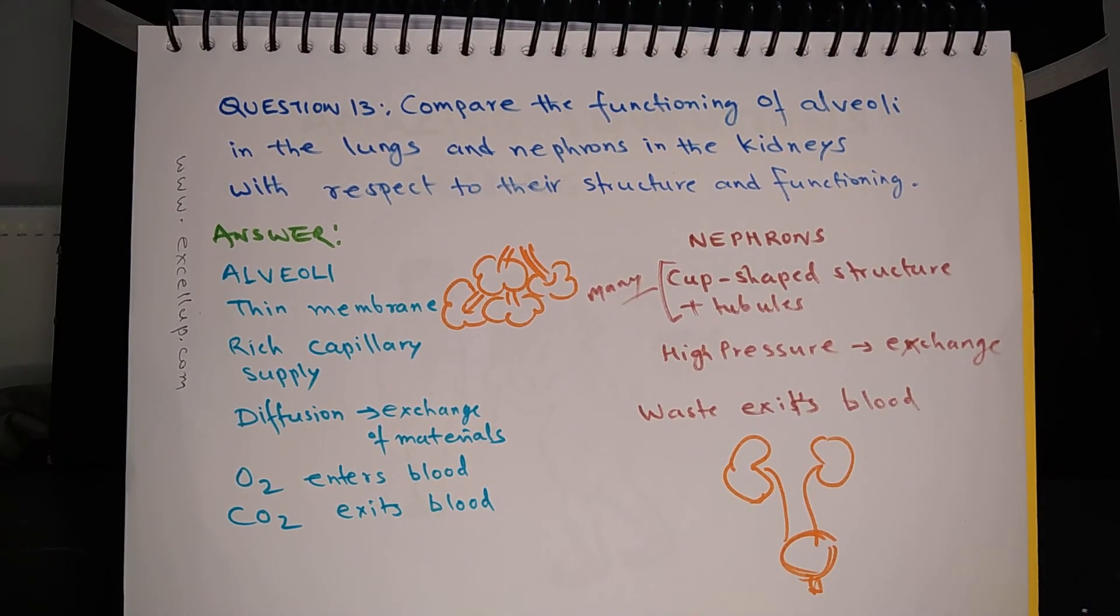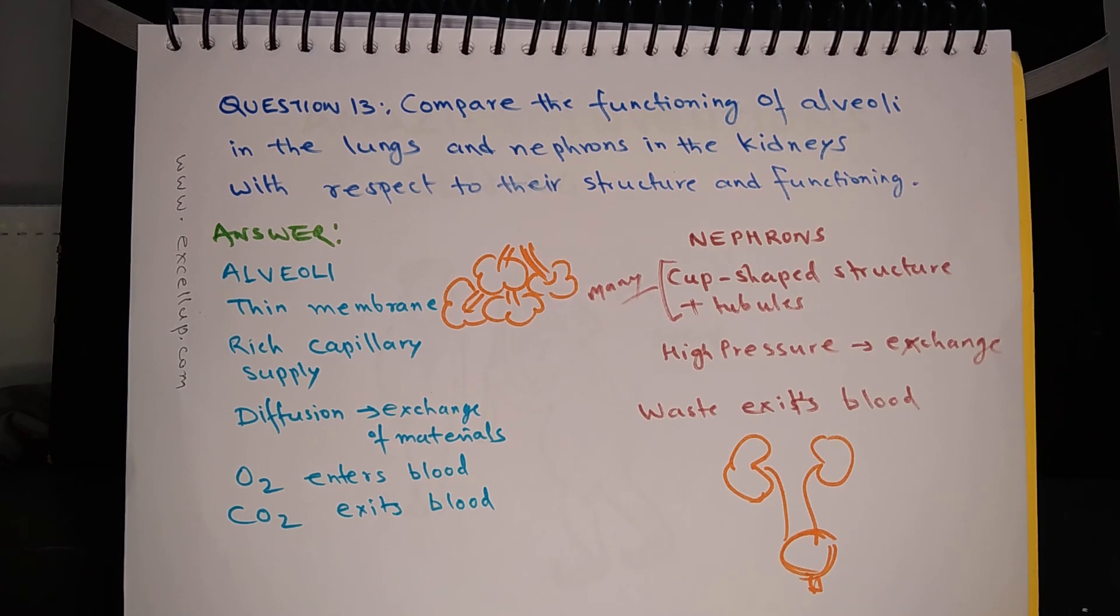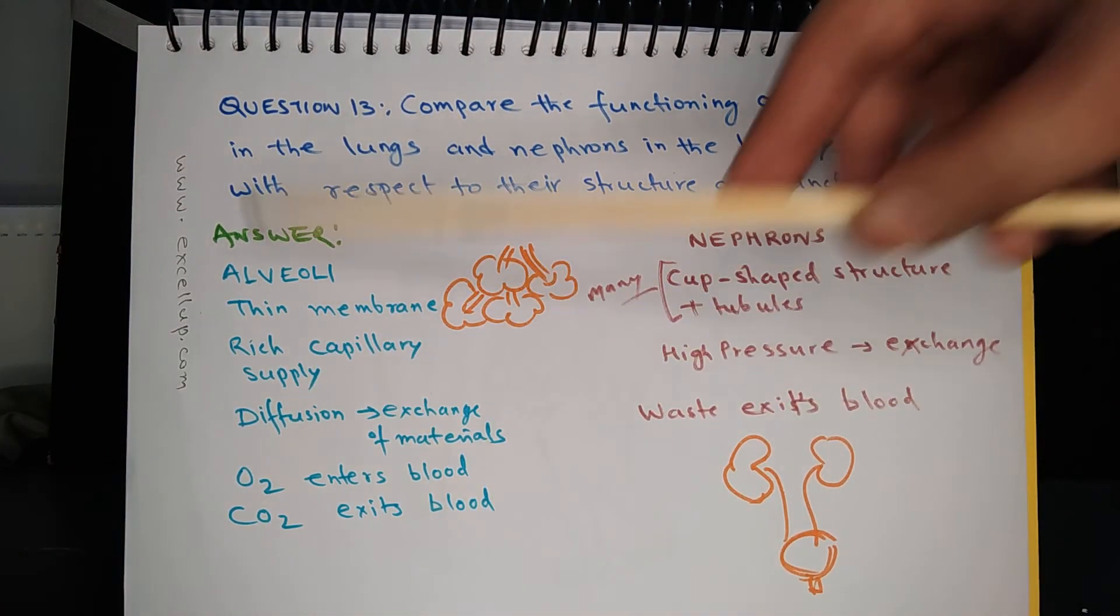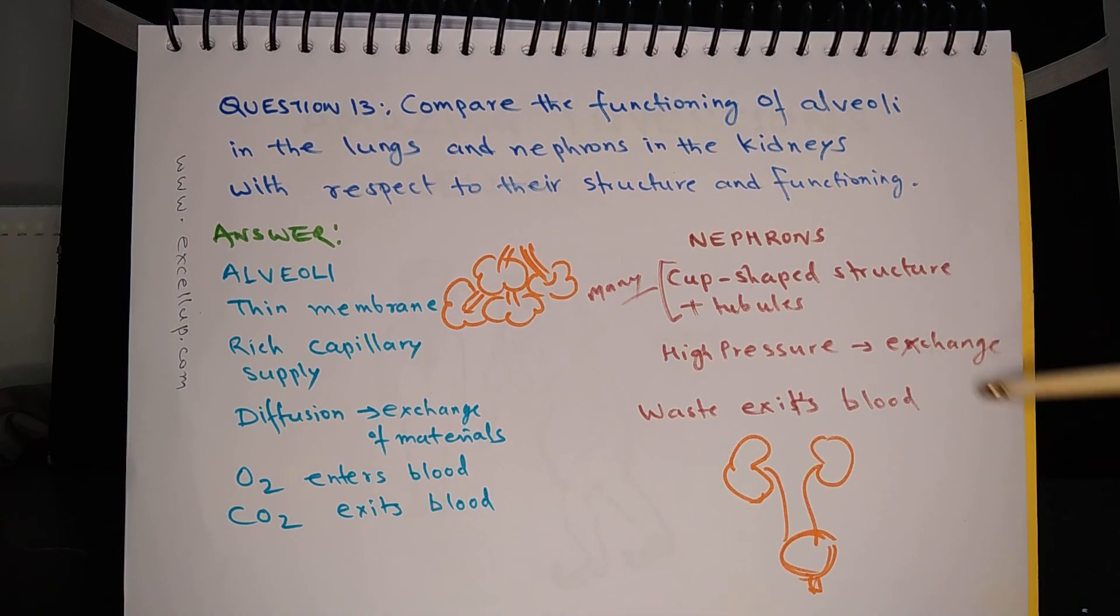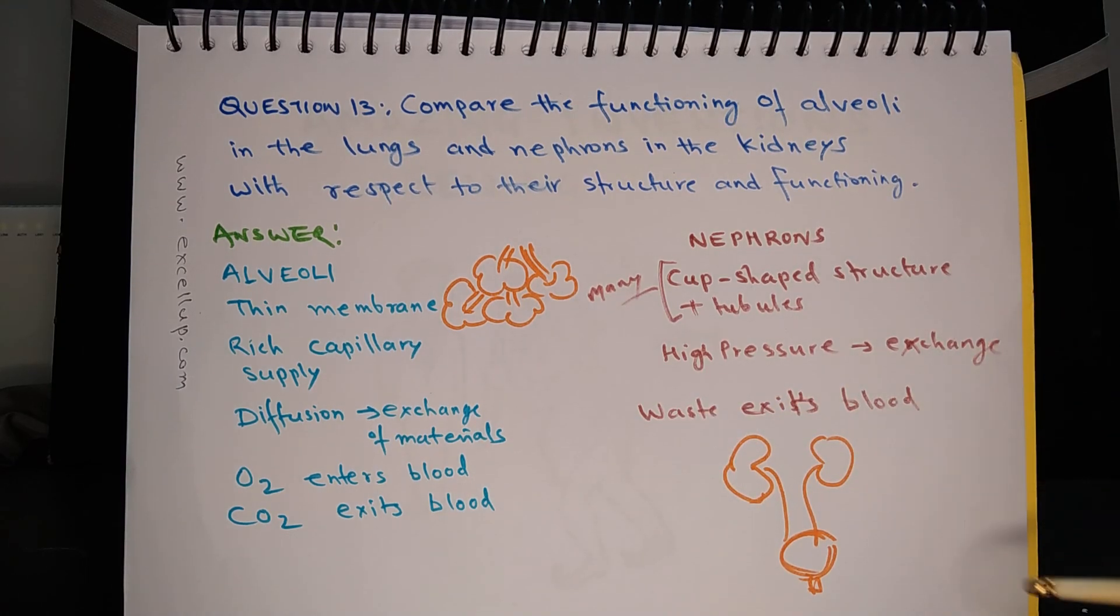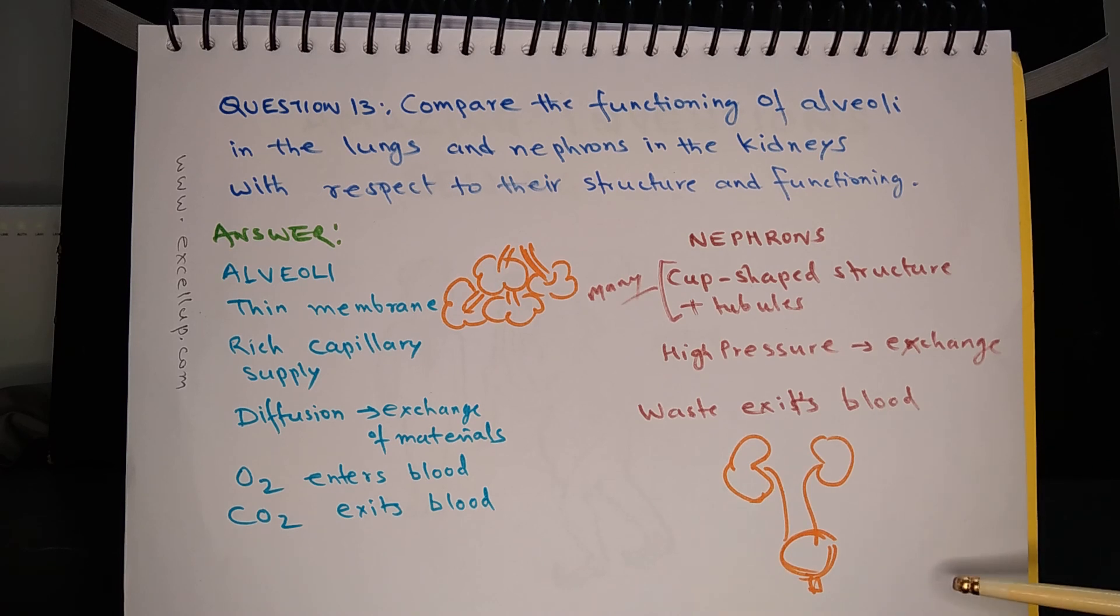Question 13: Compare the functioning of alveoli in the lungs and nephrons in kidneys with respect to their structure and functioning. Alveoli have thin membrane and rich supply of capillaries. Nephrons have numerous cup-shaped structures called Bowman's capsule and highly convoluted tubules. Exchange of materials, that is exchange of gases in alveoli, takes place through diffusion. In case of kidney, exchange of material takes place because of high pressure, the ultrafiltration or filtration under ultra high pressure. In case of alveoli, oxygen enters the blood and carbon dioxide exits the blood. In case of nephrons, waste materials come out of the blood and they make urine.